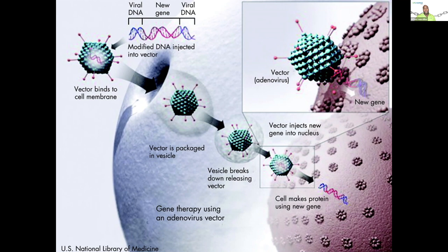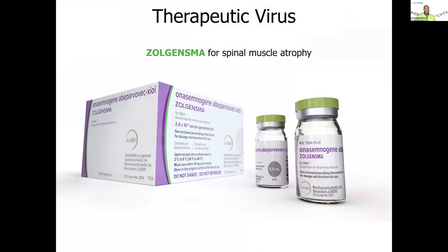You can see the example of a virus approaching a cell and entering the membrane. Once it enters, it delivers a gene. That gene is able to take over the machinery of the cell to make new proteins, which are then used for the betterment of the patient. Here's an example of Zolgensma, which is a spinal muscular atrophy therapeutic that has been FDA approved and is currently on the market. Viruses are not all that bad and they're being used today — the more we understand them, the better our hold on gene therapy.